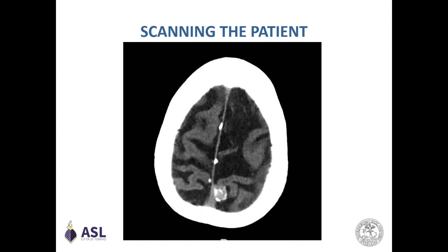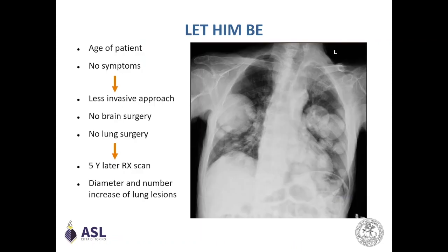Five years later, he was again admitted to the emergency ward because he had broken the ischiopubic ramus. Again he underwent a routine check scan, which showed an increase in both the number and diameter of the lung lesions, as you can see here.